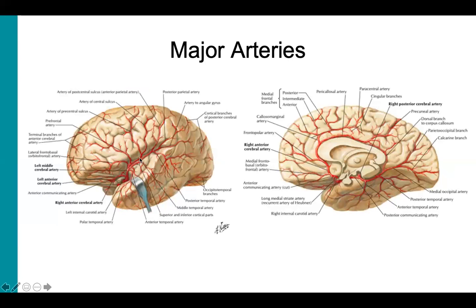On the left here, we have a lateral view of the brain, again with the temporal lobe retracted opening up the sylvian fissure to show the course of the middle cerebral artery. On the right, we have a mid-sagittal view of the brain, which shows the course of the anterior cerebral artery supplying the medial portions of the frontal and parietal lobes, as well as a view of the posterior cerebral artery, where we can see its coverage of the inferior temporal lobe as well as the occipital lobe.